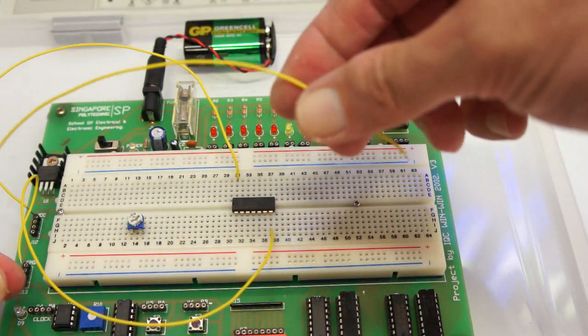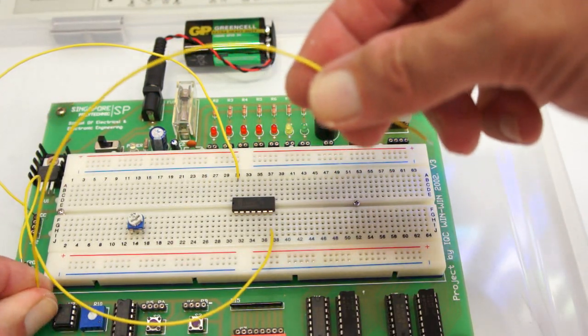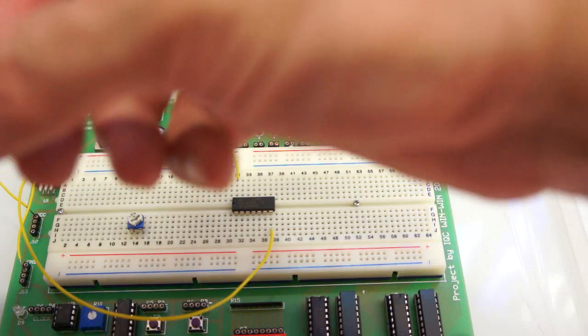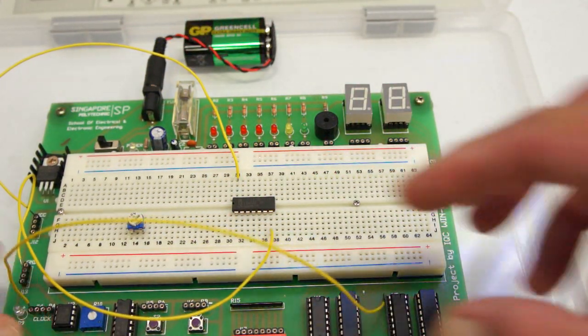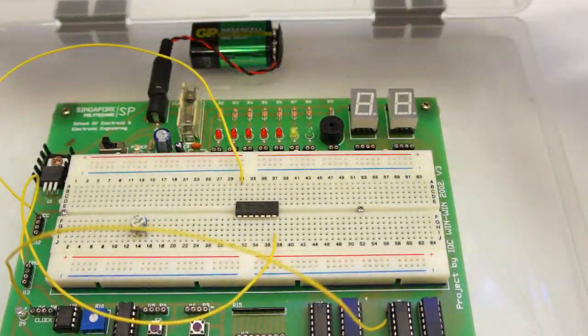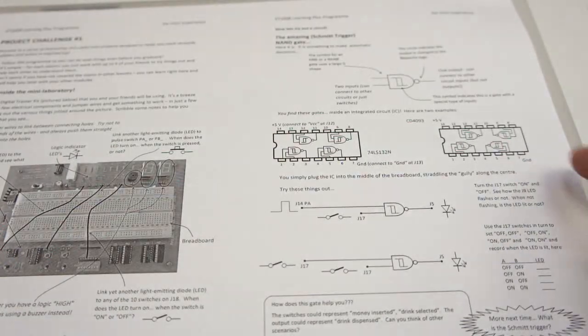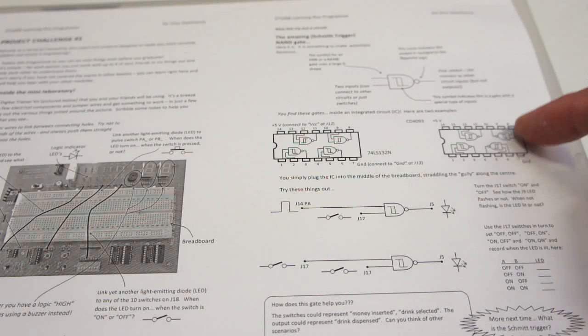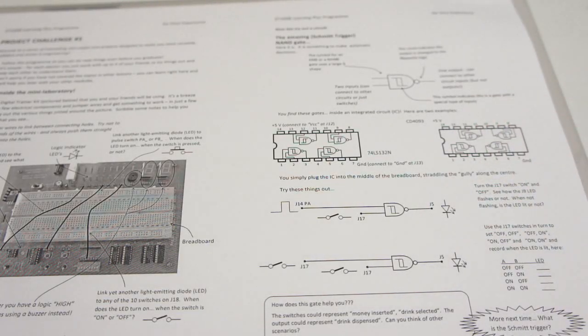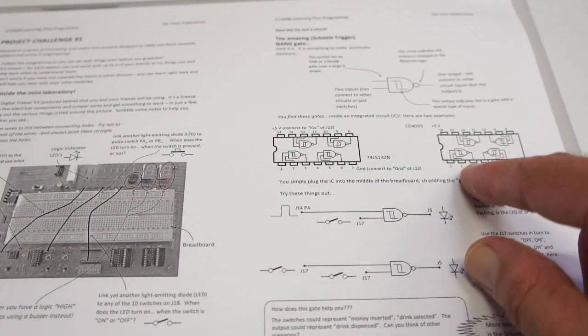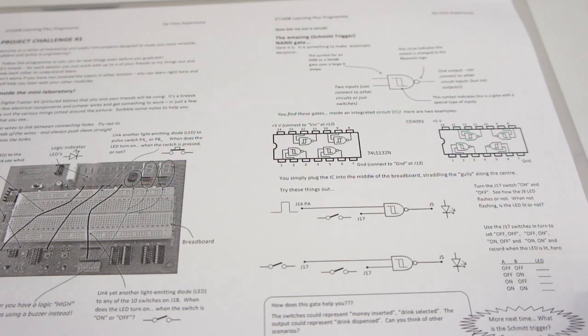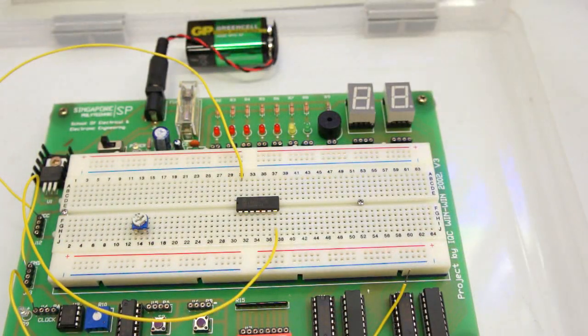J14 is going to go straight across the IC. The way this IC is organized: we've got four NAND gates inside, all pointing towards the center. So we have input, input, output, and that's the first gate.